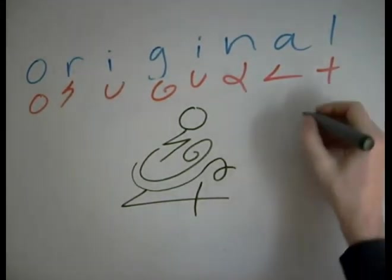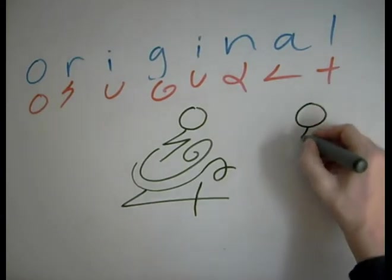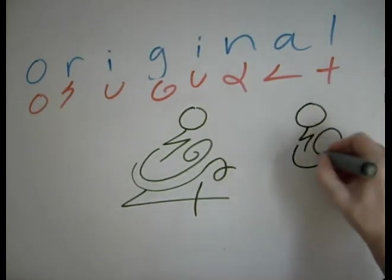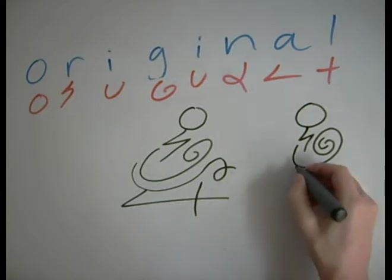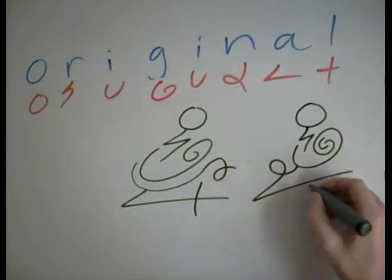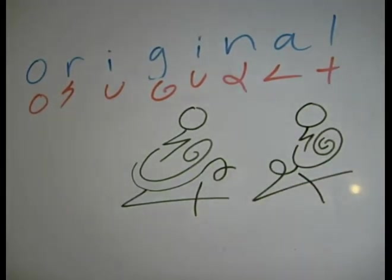What else can we do to it? Well, we could go O, R, I, G, I, N, A, L. Original.